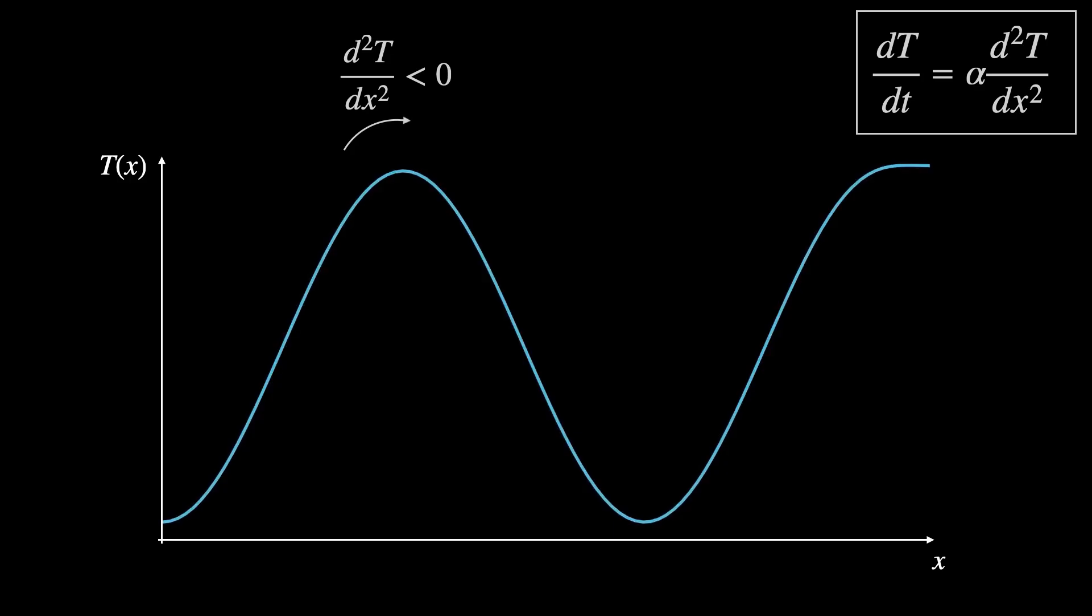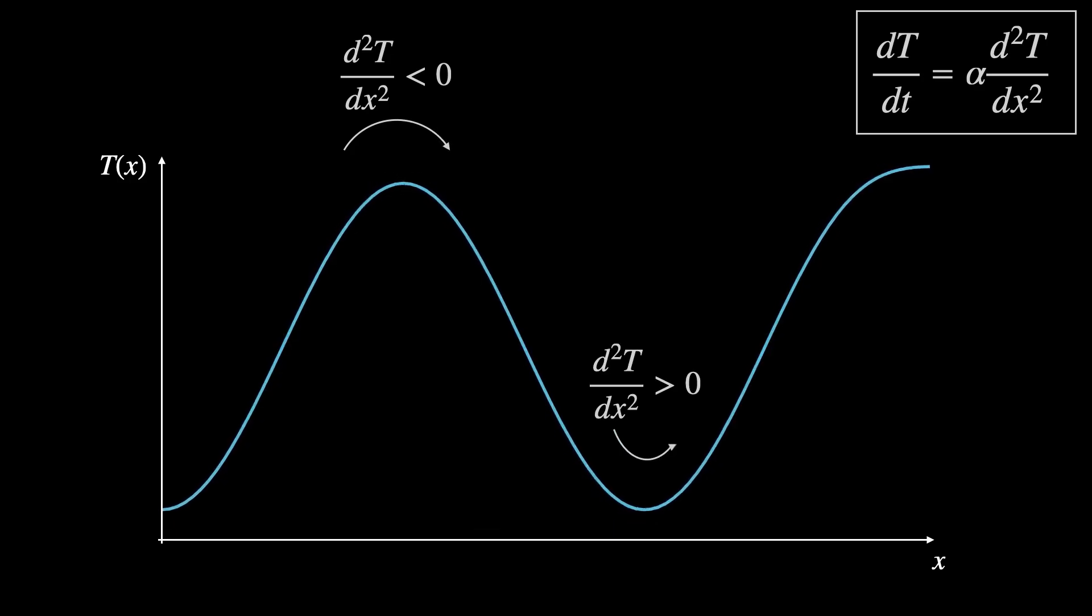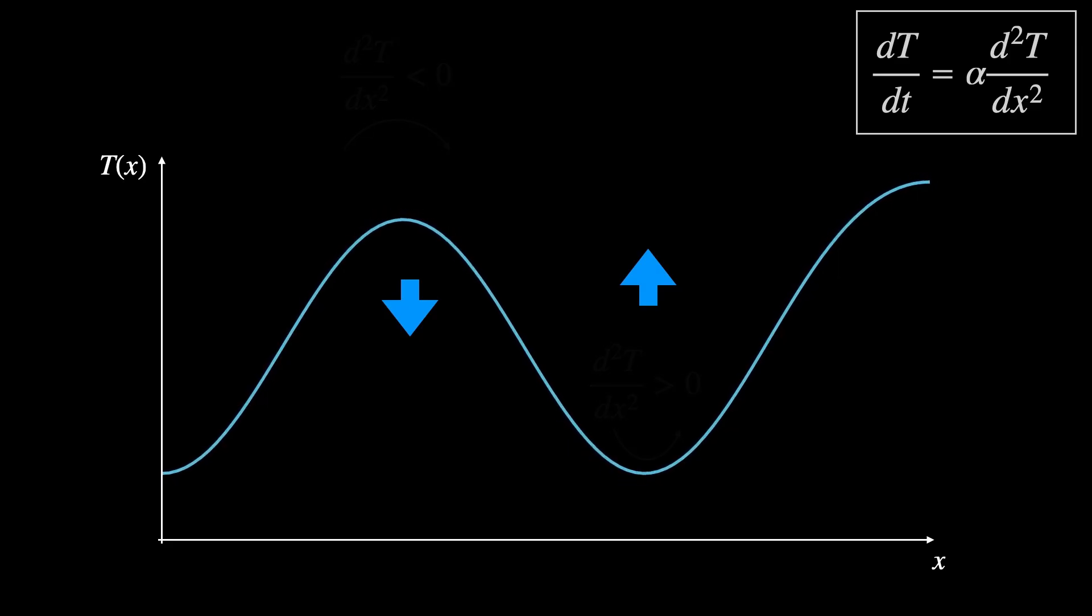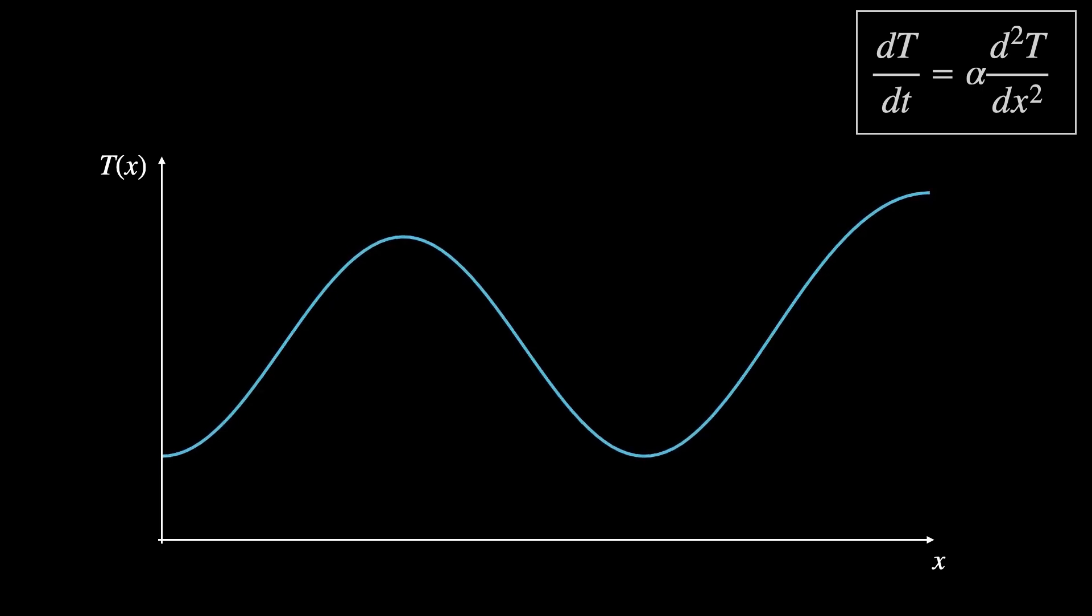What it does is given the current temperature as a function of x, it says where the second derivative, that's the curvature is negative, temperature will decrease as heat flows away from this region. And where the second derivative is positive, so the function is curving upwards, the temperature will increase as heat flows in. This makes intuitive sense because the negatively curved regions represent local hot spots and positively curved regions represent local cold spots.